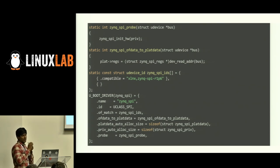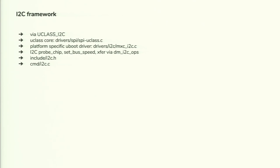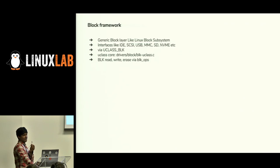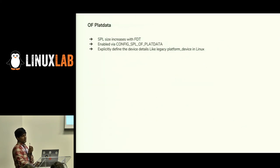The SPI driver binding should match the Linux binding. You can do operations like set speed, get speed, claim and unclaim the bus, and transfer. We also have I2C framework similar to SPI. GPIO is similar to Linux with UCLASS_GPIO. We have Ethernet and a block driver framework in UBoot following patterns similar to Linux, with all block devices categorized into U-Class. If anyone doesn't want to use the device tree, they can use platform data — similar to legacy platform devices in Linux — to get rid of the device tree and save memory.